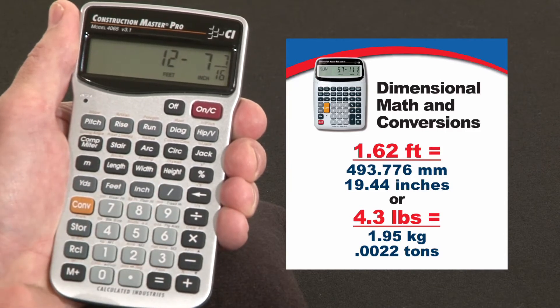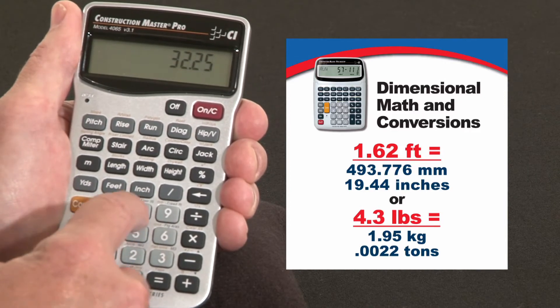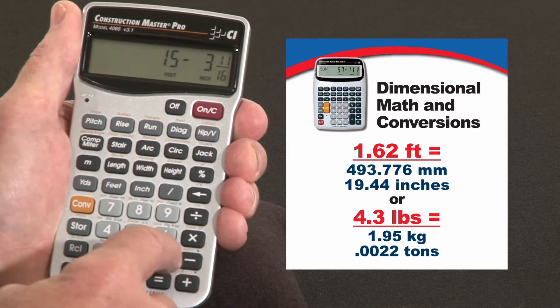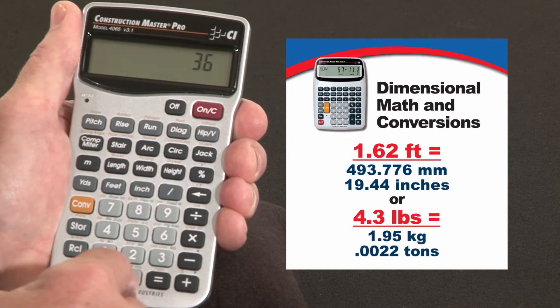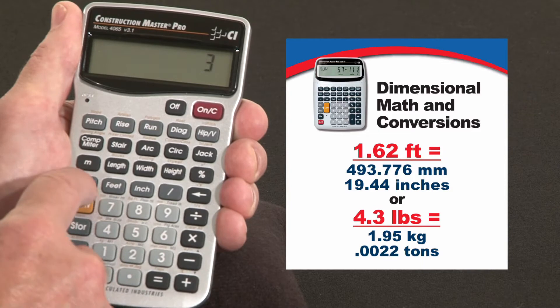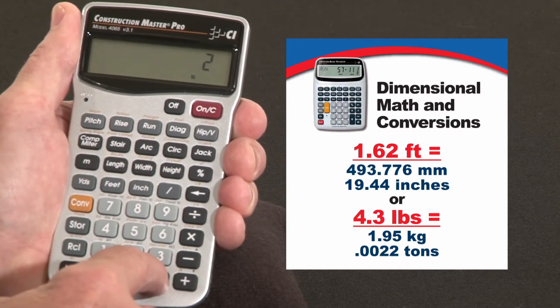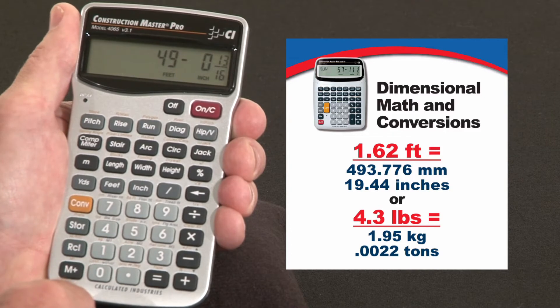Now you're not locked into the feet inch fraction format. You can mix formats together. For instance, plus thirty-two point two five inches plus thirty-six point two feet minus three yards plus two meters. Just to mix it up. Hit the equal key. It's going to come back in the format we started with which is feet inch fractions.